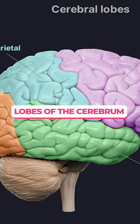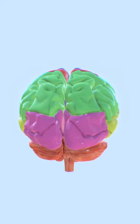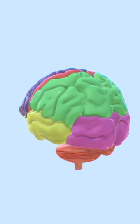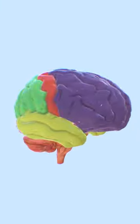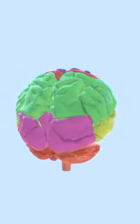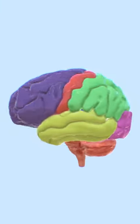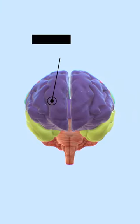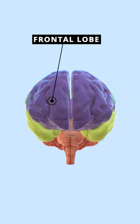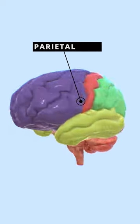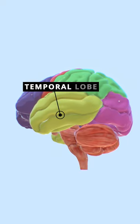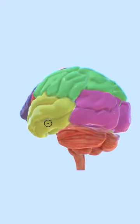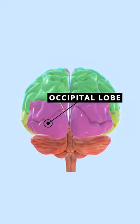Lobes of the cerebrum. The cerebral cortex, the outer layer of the cerebrum, is divided into four main lobes: frontal lobe, parietal lobe, temporal lobe, and occipital lobe.